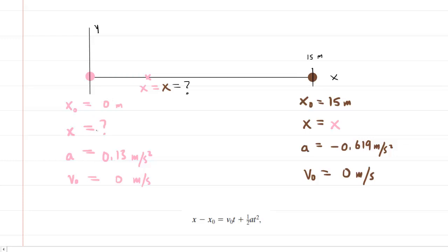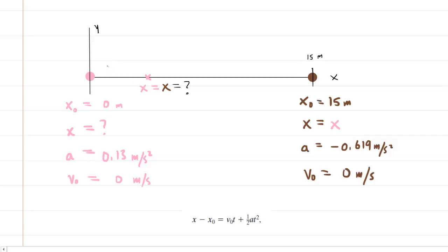We don't know her final x coordinate — that's what we're looking for in this part. Her acceleration is positive 0.13 meters per second squared, because she is being accelerated to the right in this diagram. We can also assume her initial velocity is 0 meters per second because she starts from rest.